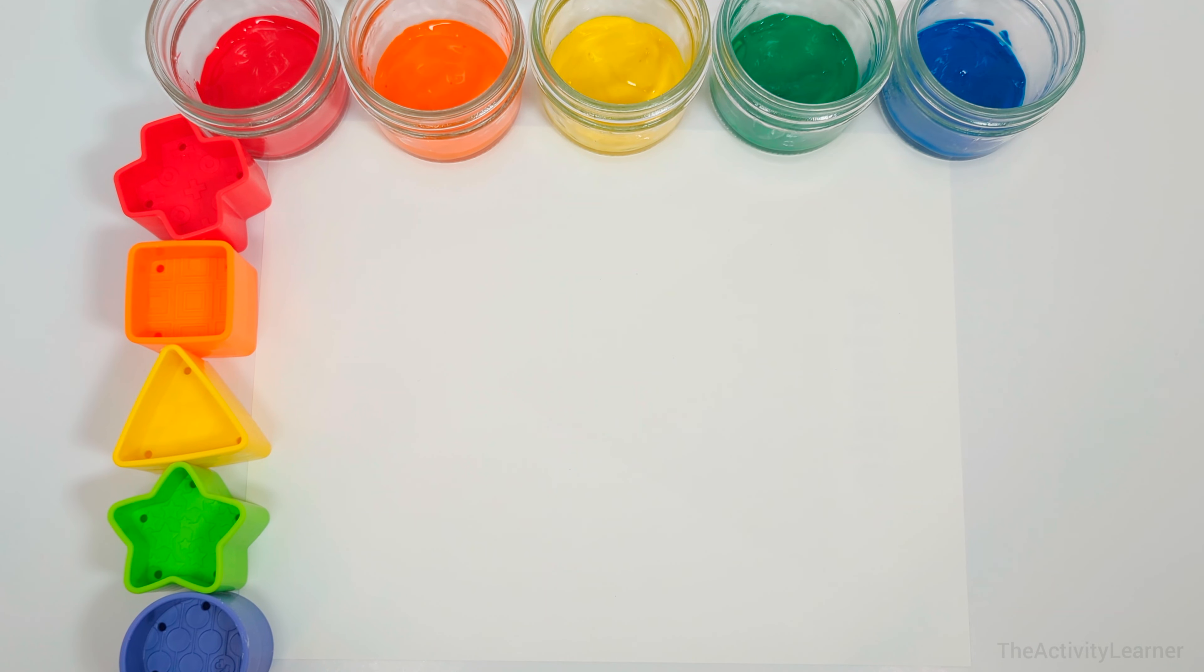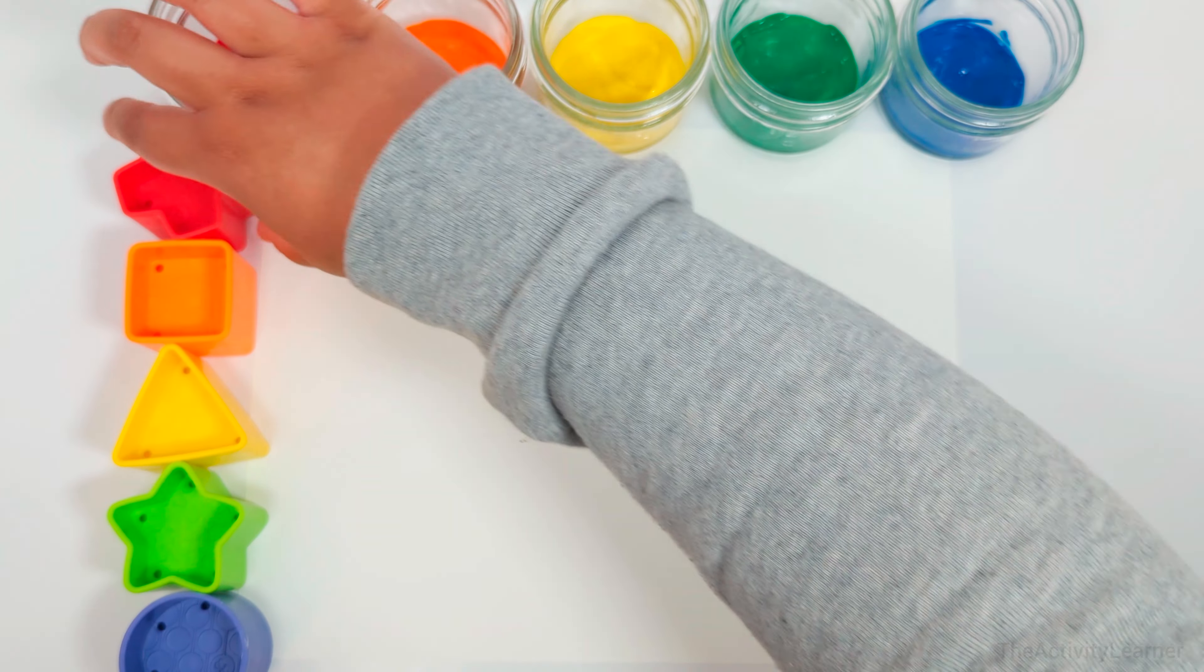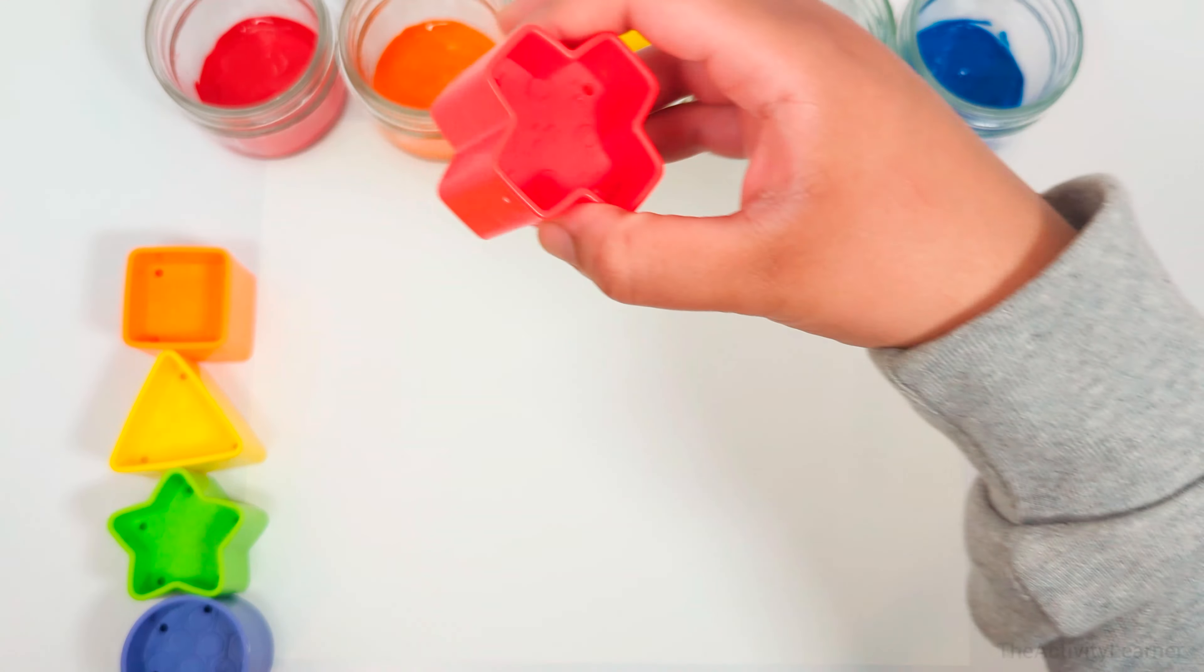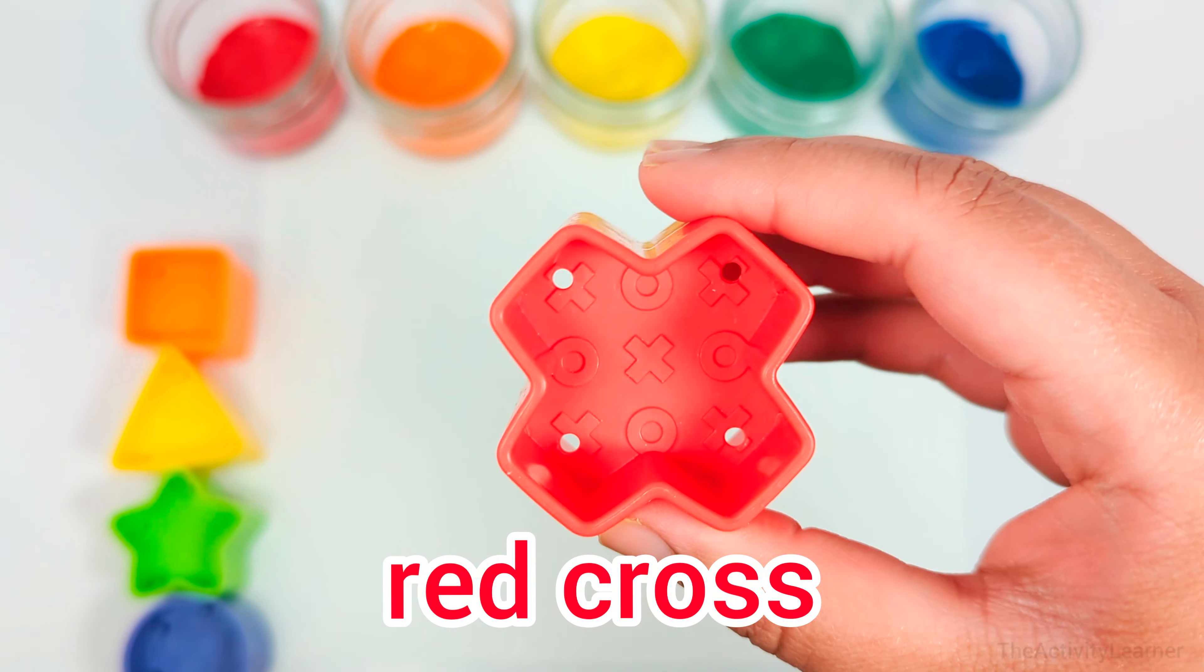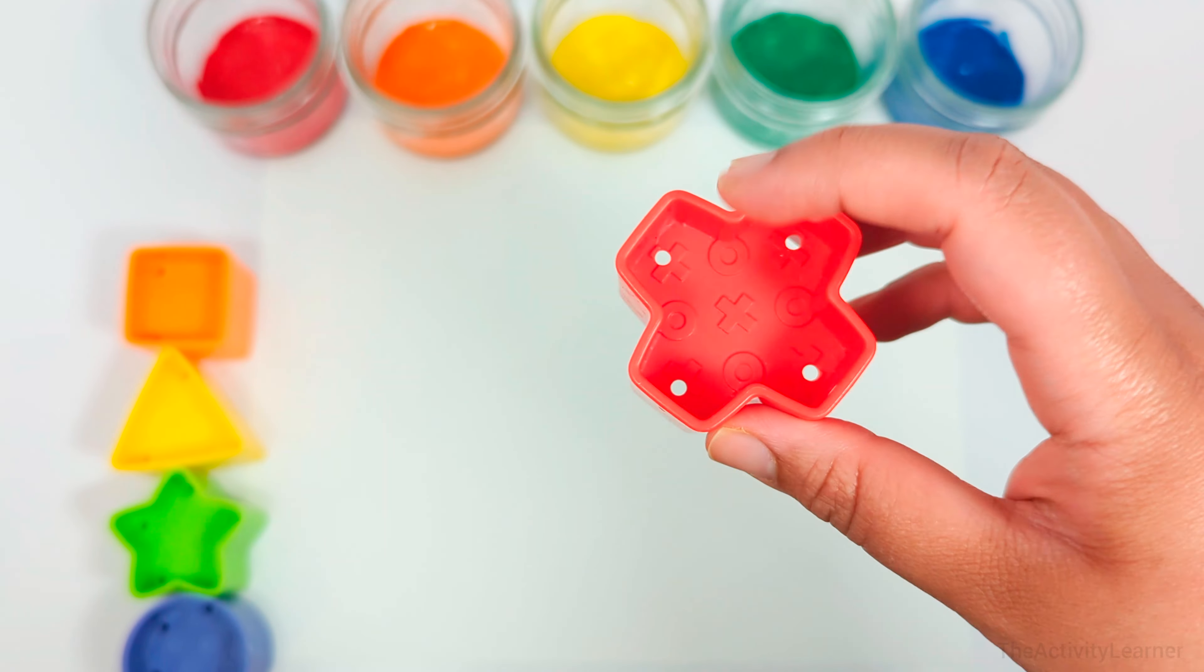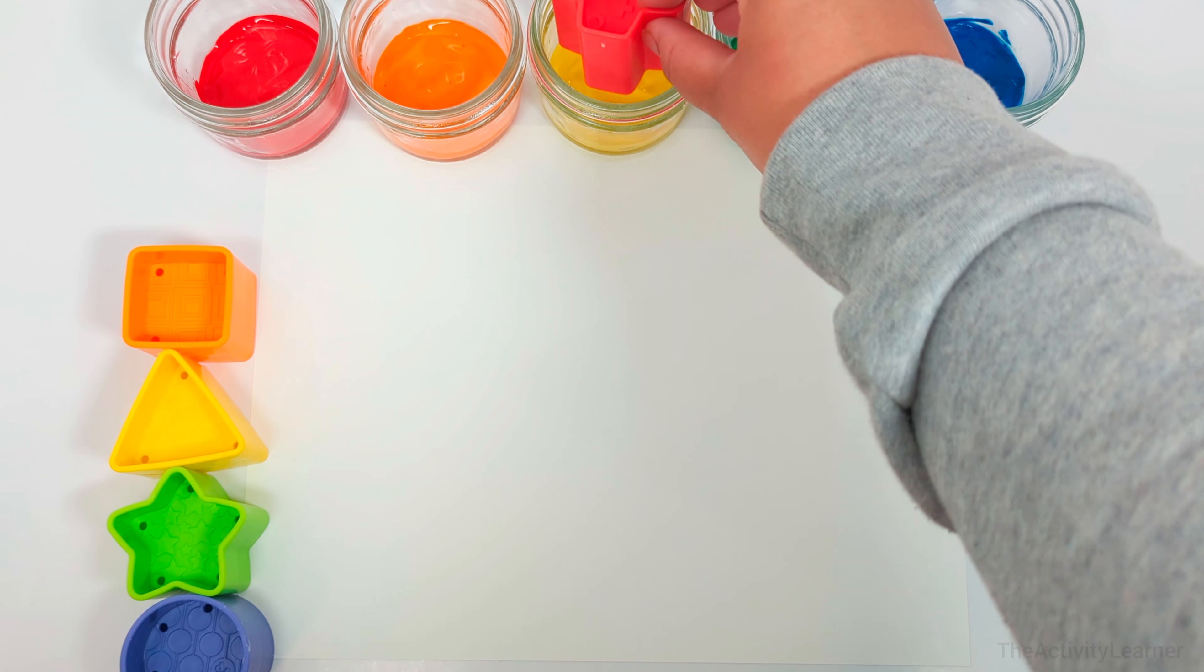Hey activity learners, let's paint using shape blocks. This is a red cross, a cross has 12 sides. I'm going to put it in the yellow paint.